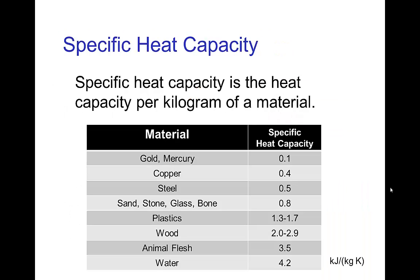Different materials have different heat capacities and we measure this as the specific heat capacity - that's the heat capacity per kilogram of material. The lowest heat capacities are with the metals like gold, copper, steel. Then intermediate ones would be things like sand, stone, glass, bone, plastics. And then the highest ones would be something like flesh because it has a lot of water. And then water itself has a very high specific heat capacity.